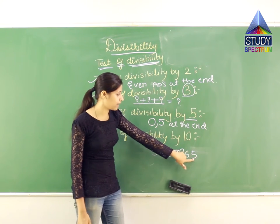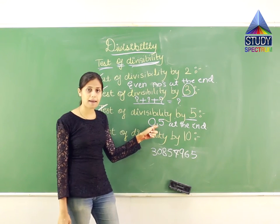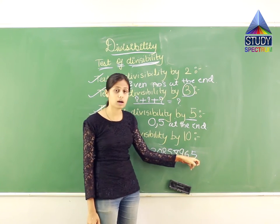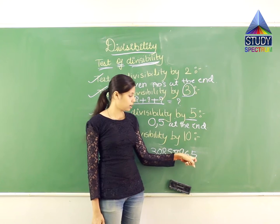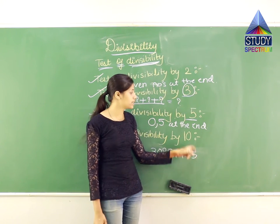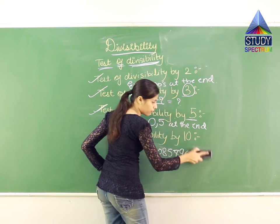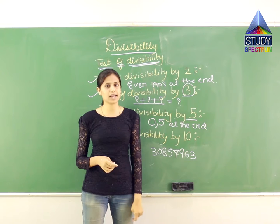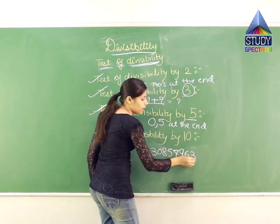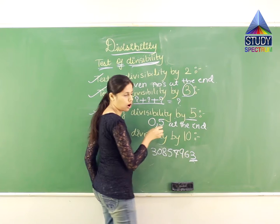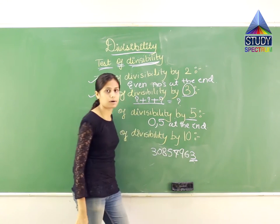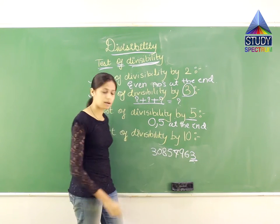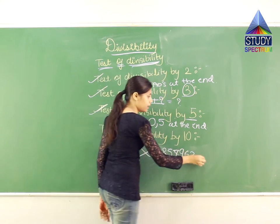If the last digit is 5, it is divisible by 5. If the last digit is changed to 3, it is no longer divisible by 5 because 3 is neither 0 nor 5. So if 0 or 5 is required at the end and you have 3, then this number is not divisible by 5.